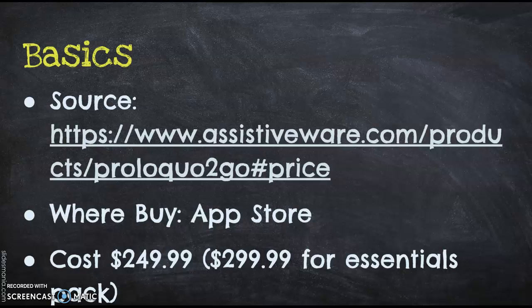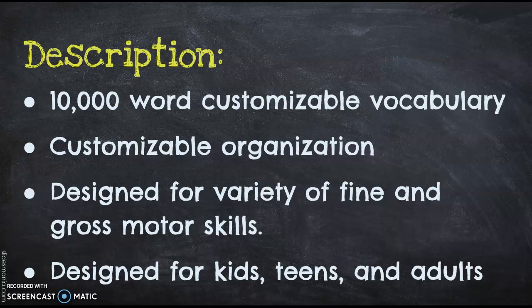You can buy it in the App Store. The cost is about $250 for basic pack, $300 for an essential pack. Description of it is that there's about a 10,000 word customizable vocabulary, customizable organization, designed for variety of fine and gross motor skills, designed for kids, teens, as well as adults.